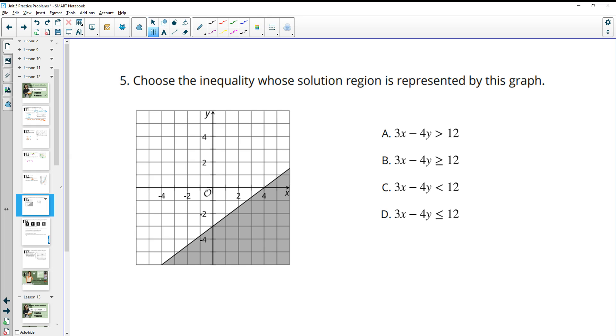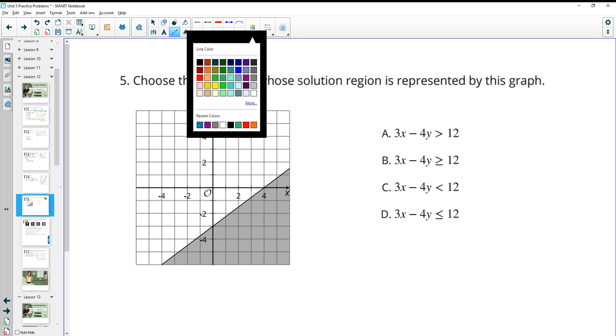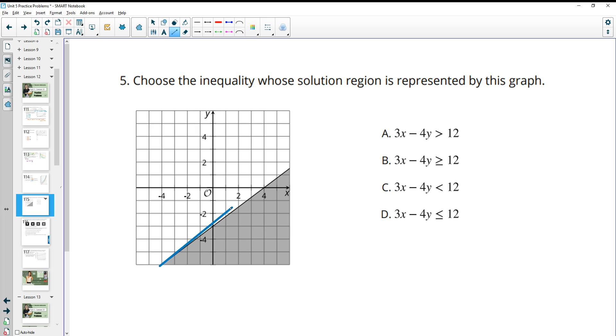Number five, choose the inequality whose solution region is represented by this graph. One thing that hopefully you notice right away is that this line is a solid line. So if it's a solid line, that means we need this equal sign under our inequality. So that rules out A and C automatically.